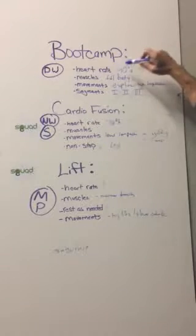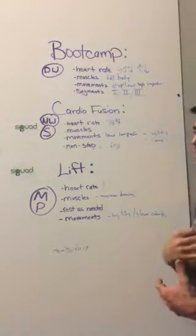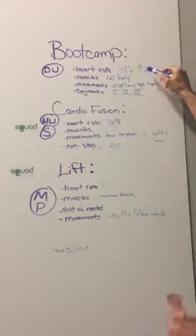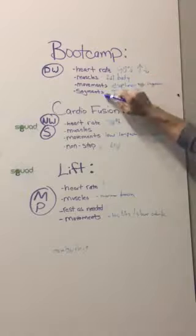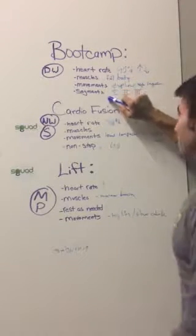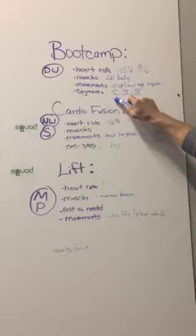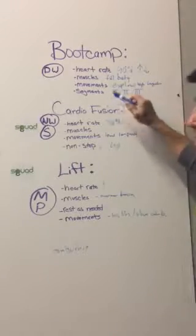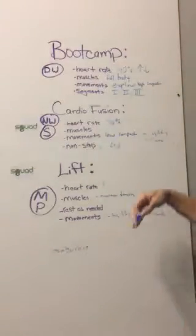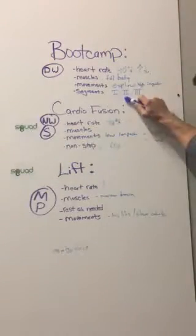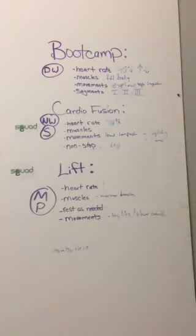Boot camps — heart rate is super high. We're looking at 90% of the heart rate they can handle, which means they're not going to sustain that, so the heart rate is going to go up and down throughout the workout. That's why we do this in segments, listed by Roman numerals. Each segment could be four to twenty minutes going as hard as they possibly can, then they rest and recover for one to three minutes, regroup, talk about the next segment, and then go again.